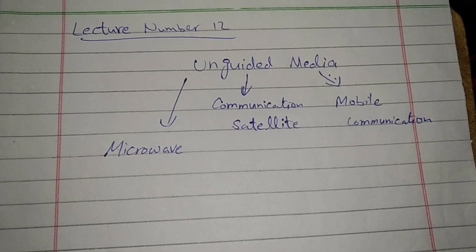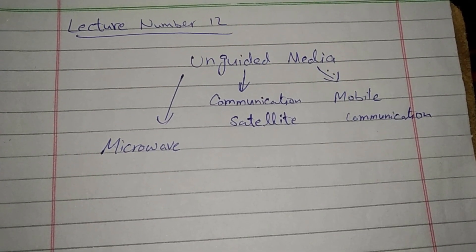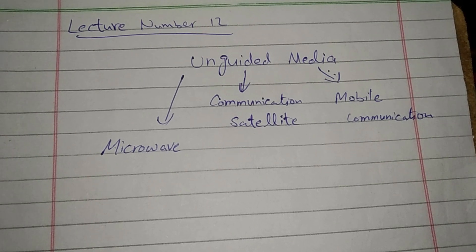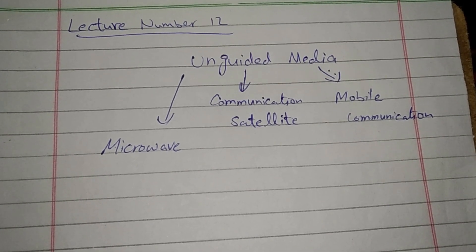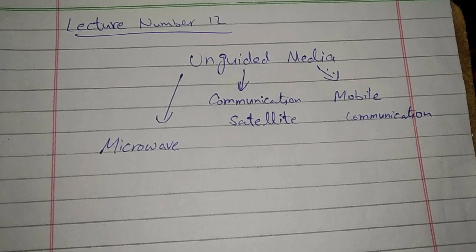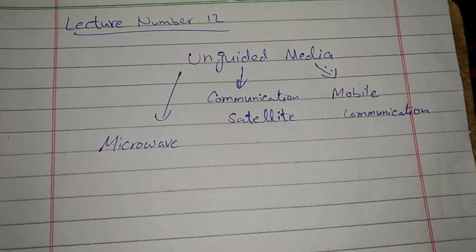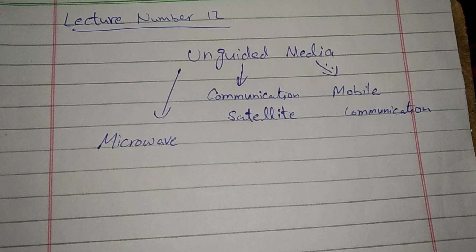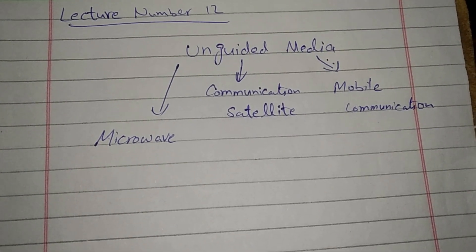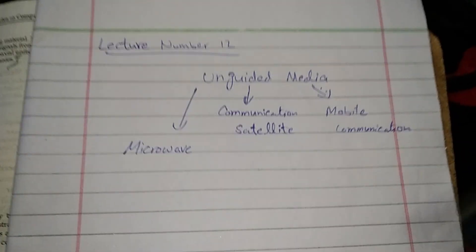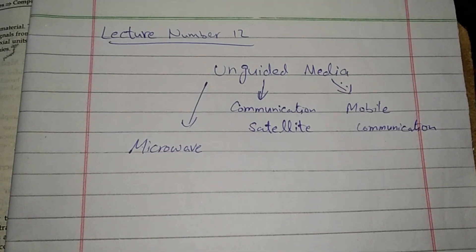Today we start lecture number 12, in which we will discuss unguided media. There are three types of unguided media: microwaves, communication satellites, and mobile communication.